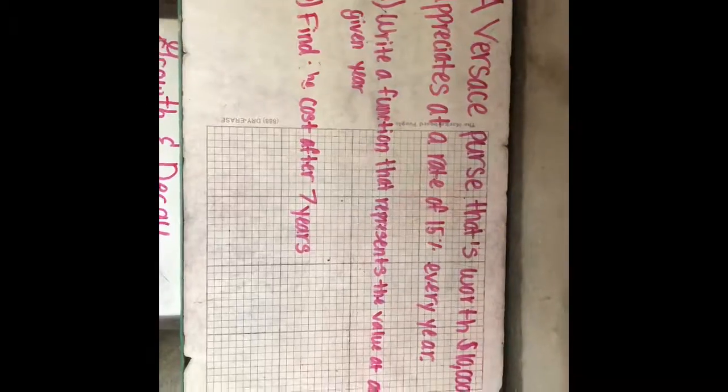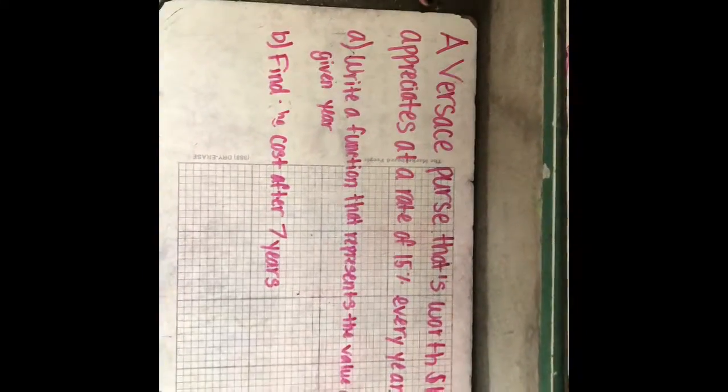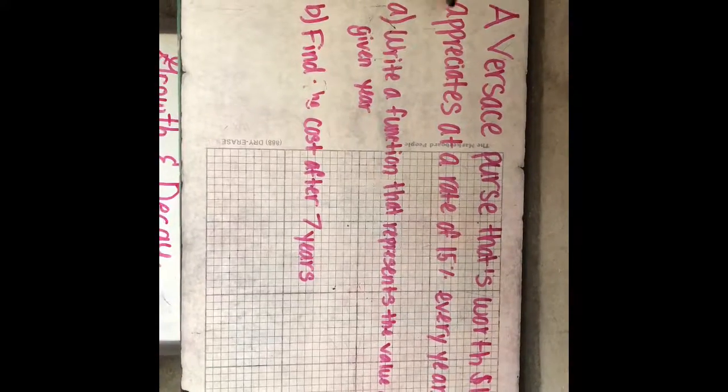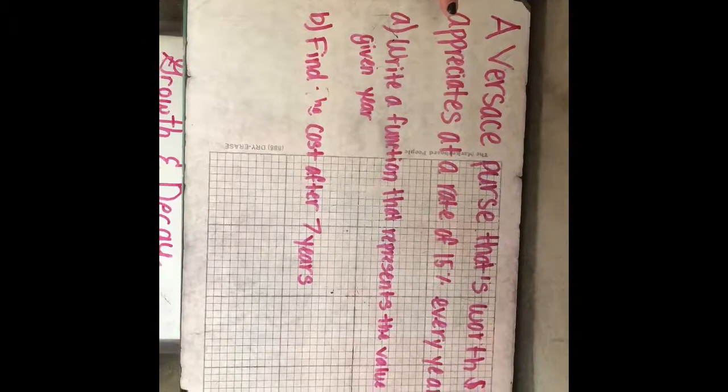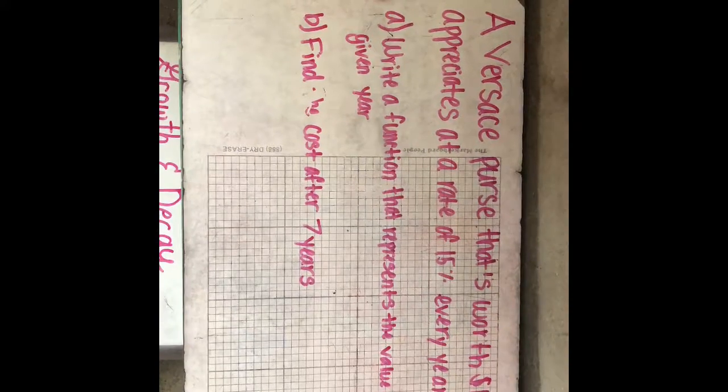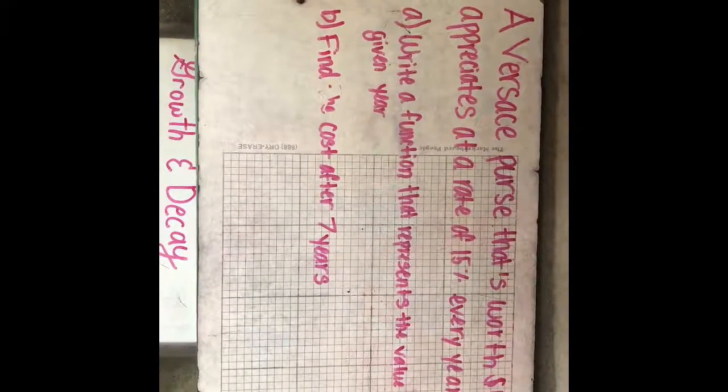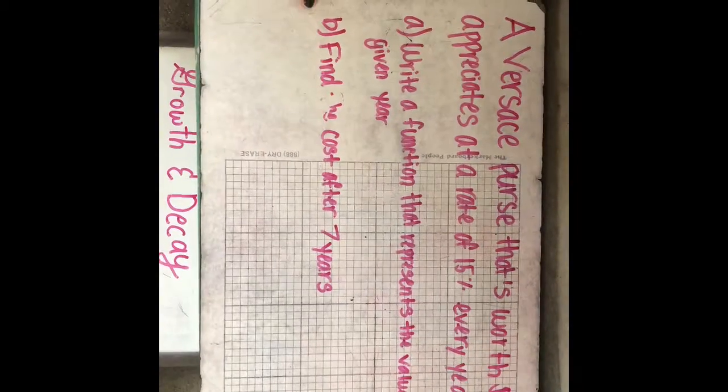Okay, so our problem is split into two parts and it regards a Versace purse that's worth $10,000 that appreciates at the rate of 15% every year. The first part is writing a function that represents the value at any given year, and the second part is to find the cost after seven years.